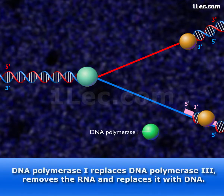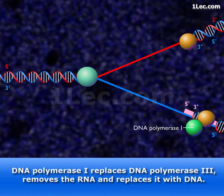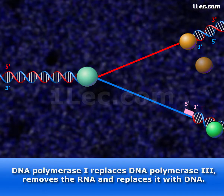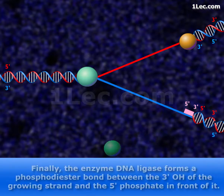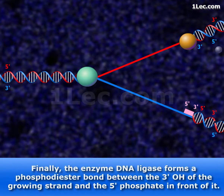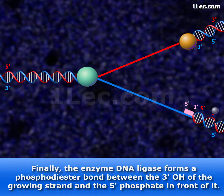DNA polymerase I replaces DNA polymerase III, removes the RNA, and replaces it with DNA. Finally, the enzyme DNA ligase forms a phosphodiester bond between the 3' OH of the growing strand and the 5' phosphate in front of it.